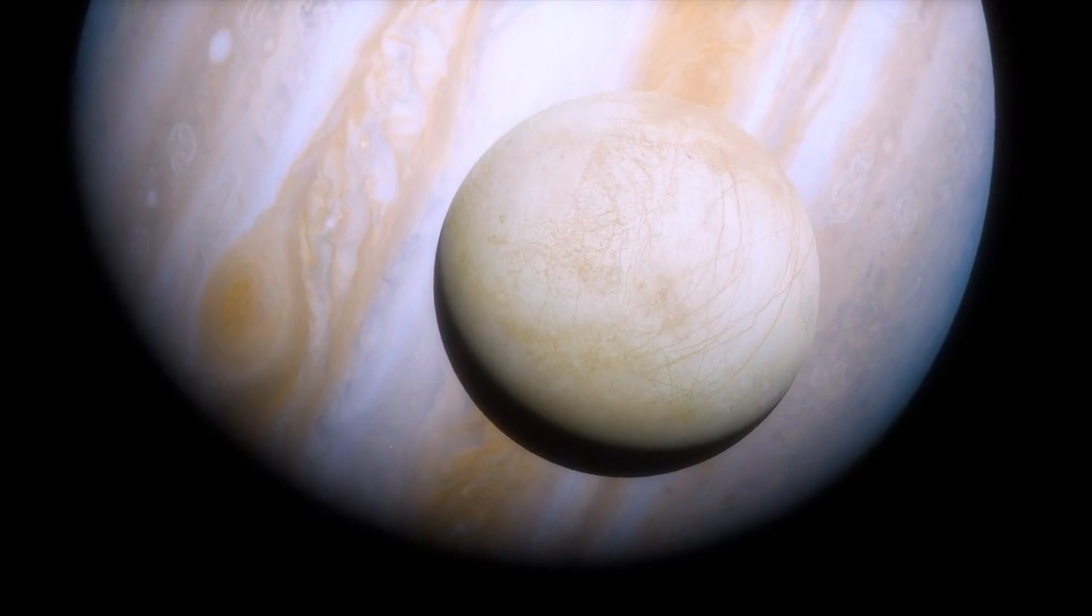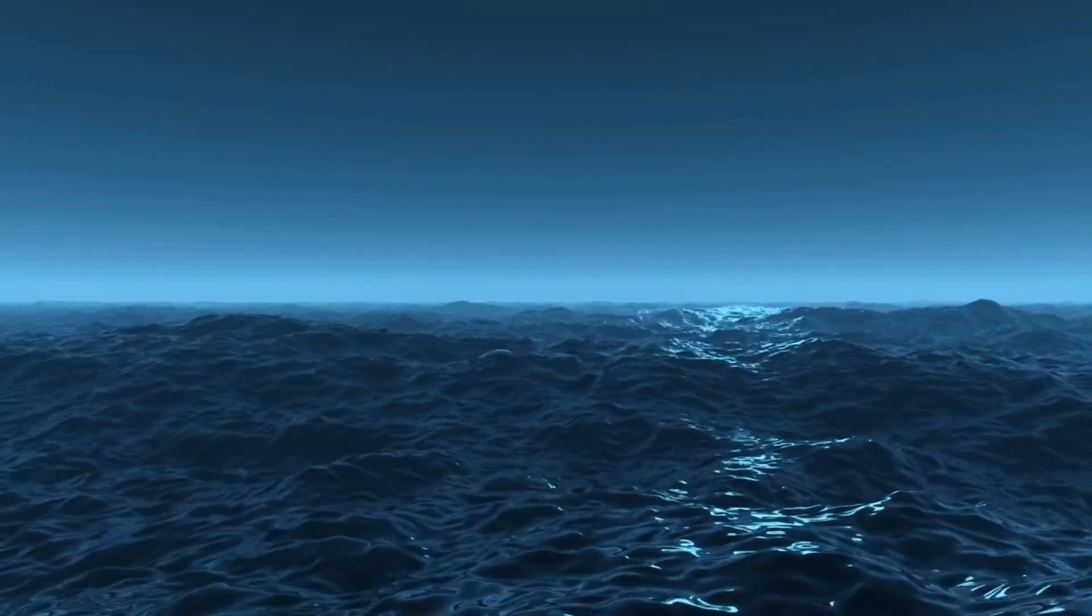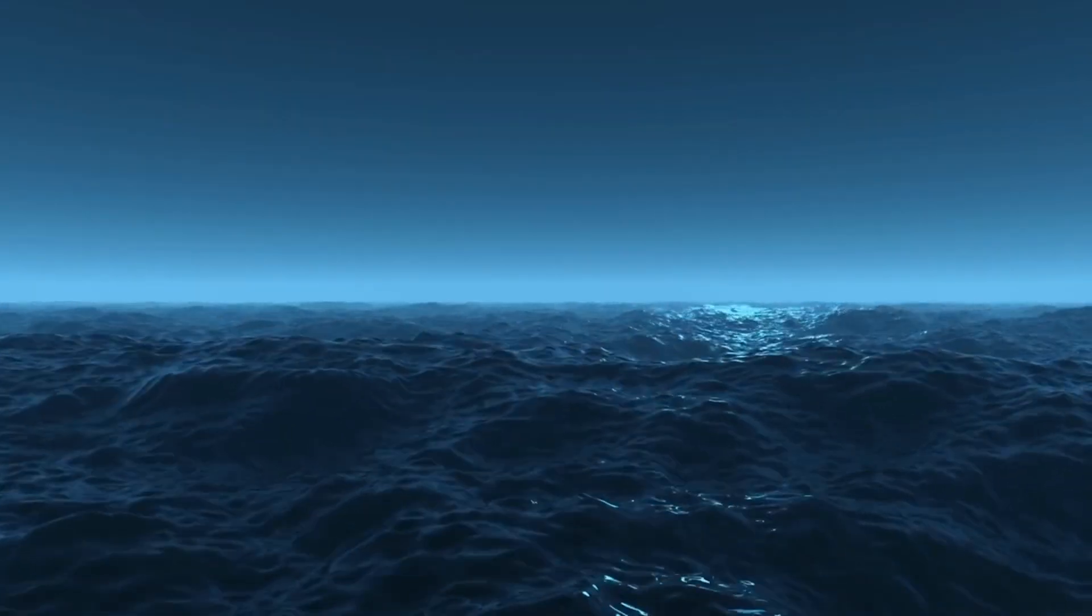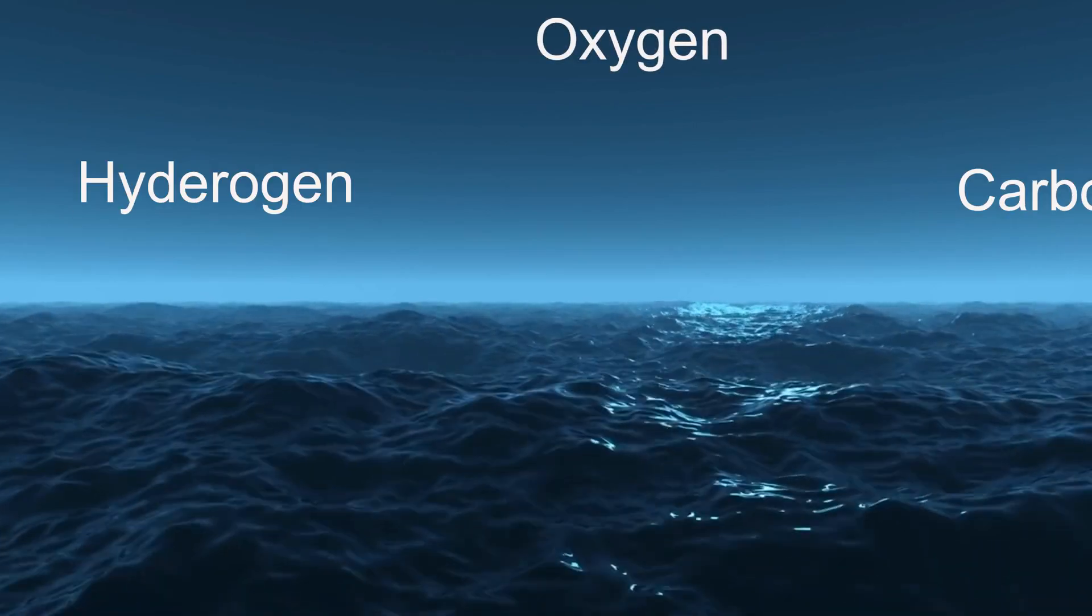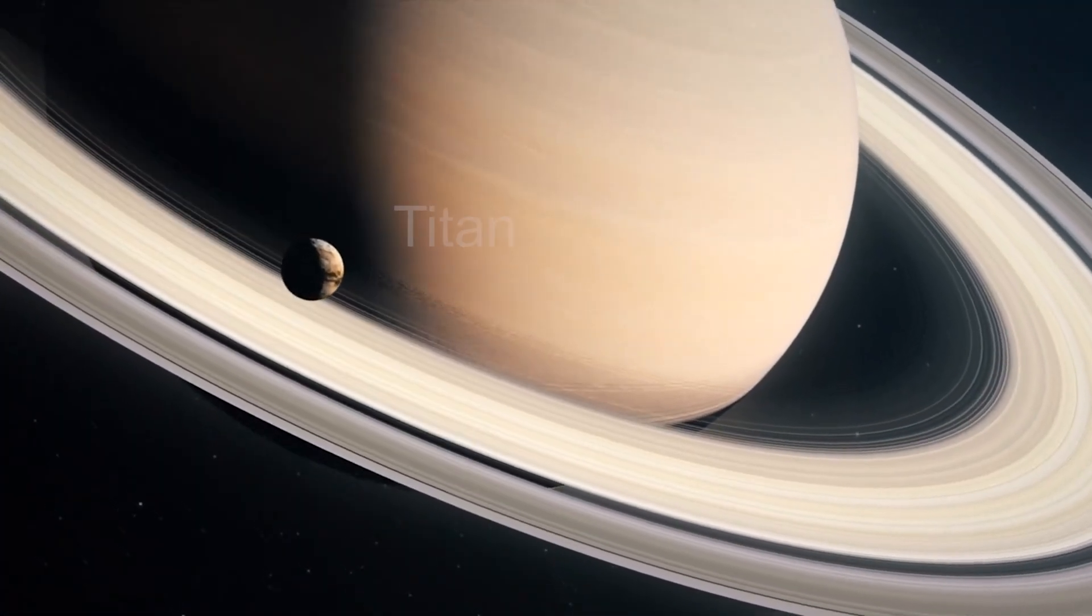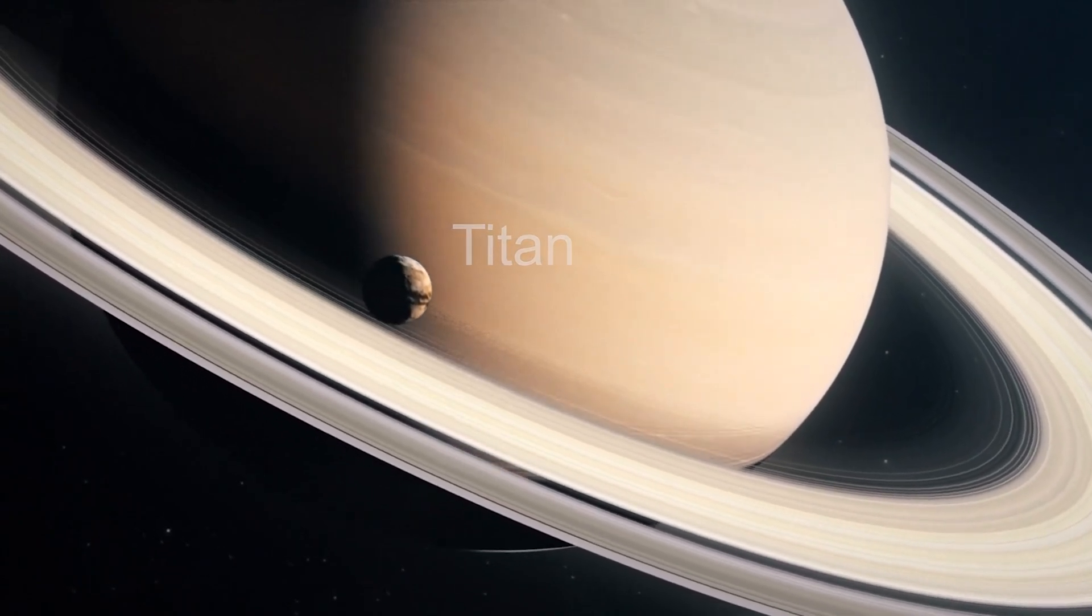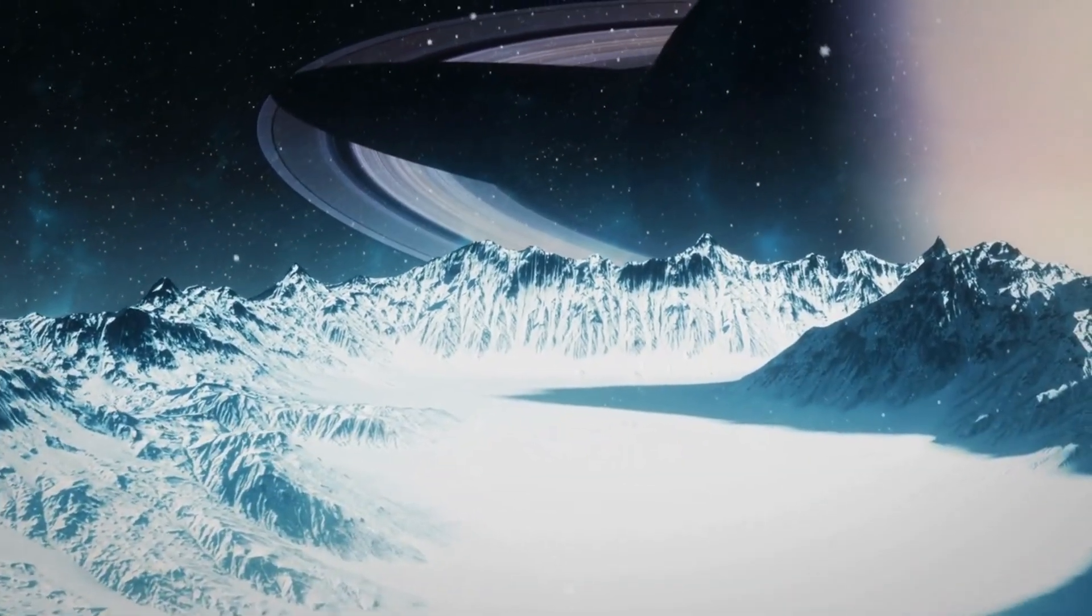This ocean is thought to be heated by tidal forces from Jupiter, and it may contain the ingredients for life, such as oxygen, hydrogen, and carbon. Or a moon of Saturn named Titan, which has a thick atmosphere and could achieve surface temperatures warm enough to support life.